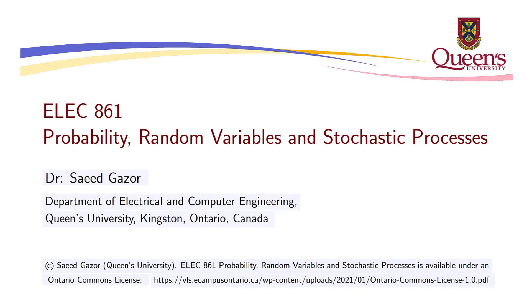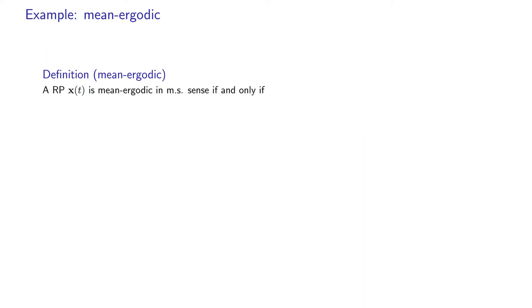Let's consider a stochastic process X of T and the easiest statistic, the mean of X of T. For other statistics like autocorrelation functions, the definition can be easily extended. The expected learning outcome is that you would know the definitions and be able to verify if the definitions are valid in your application or research area. We say that a random process is mean ergodic in the mean square sense under some conditions.